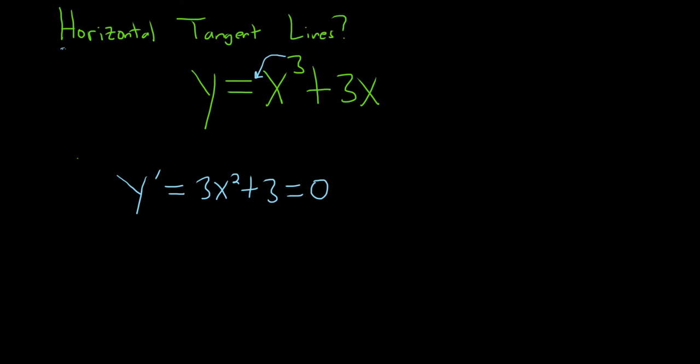And at this point, we can see that there is no solution. Because 3x squared is either positive or it's 0 if x is 0. And then we're adding 3 to it. So if you add a positive number to something that is positive or 0, the result is positive. There's no way it can be equal to 0.